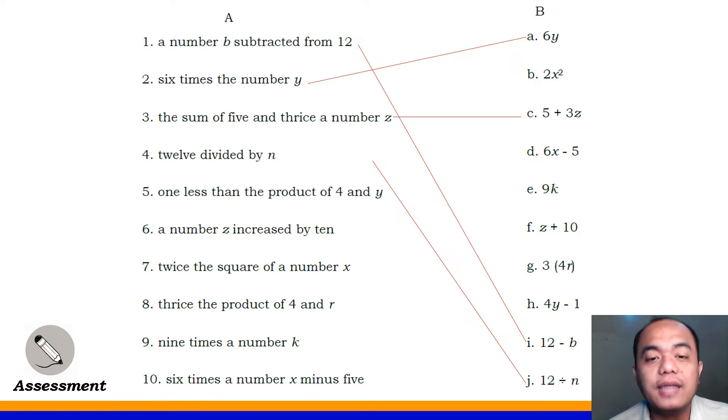Next, number 5, one less than the product of 4 and Y. Very good! It's letter H, 4Y minus 1. Number 6, a number Z increased by 10. What's the answer? Very good! It's letter F, Z plus 10. Number 7, twice the square of a number X. Very good! It's letter B, 2X squared.